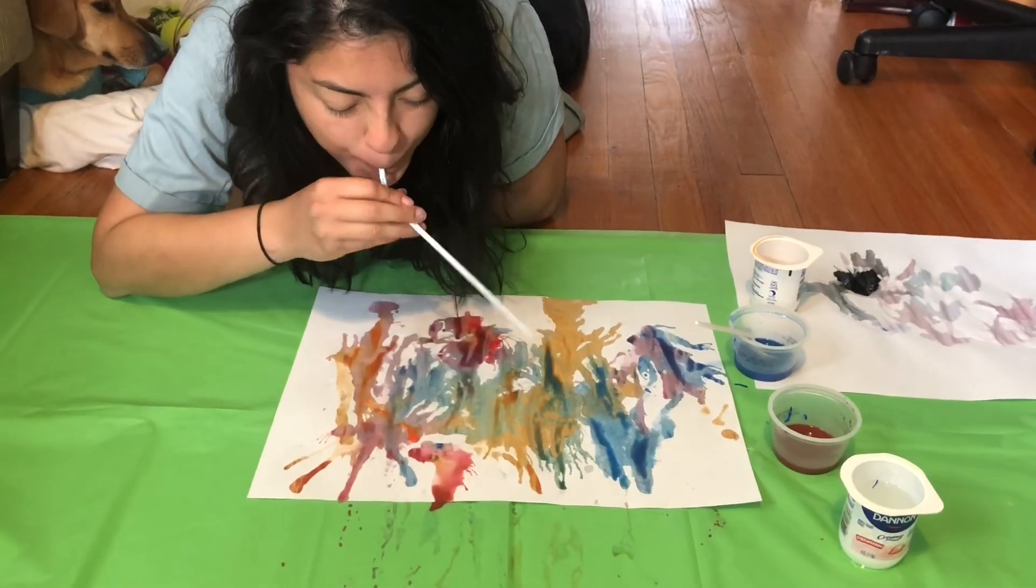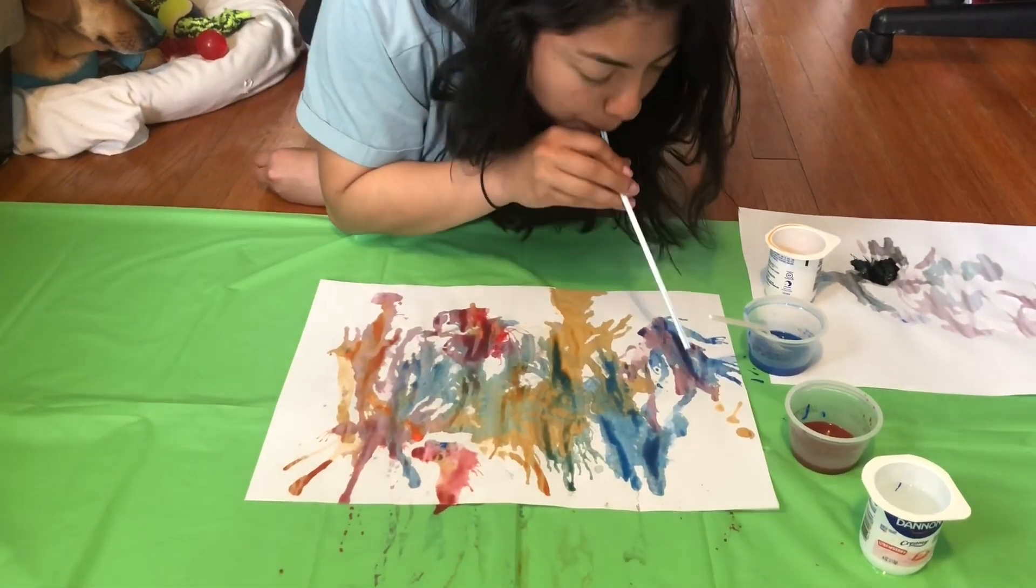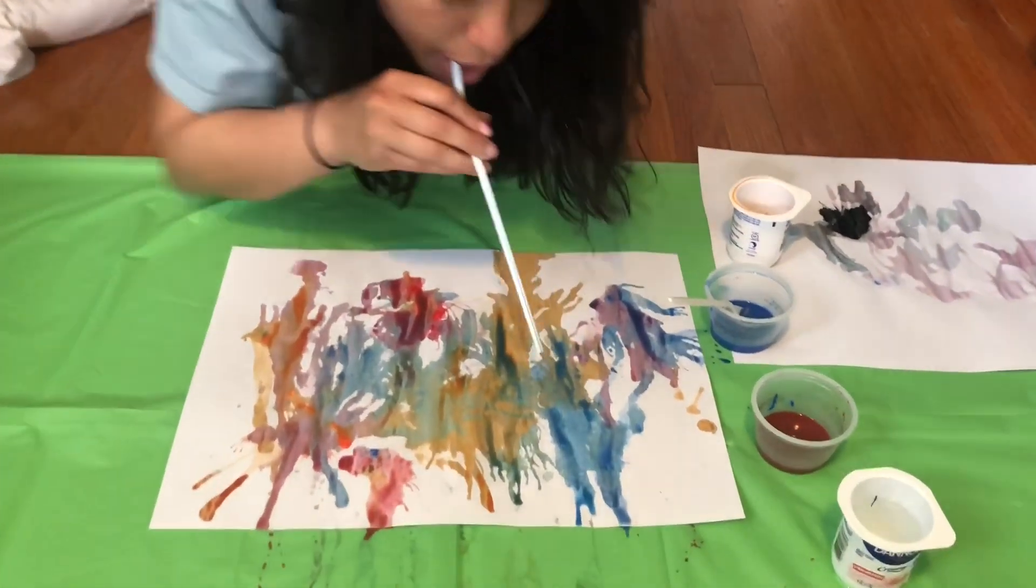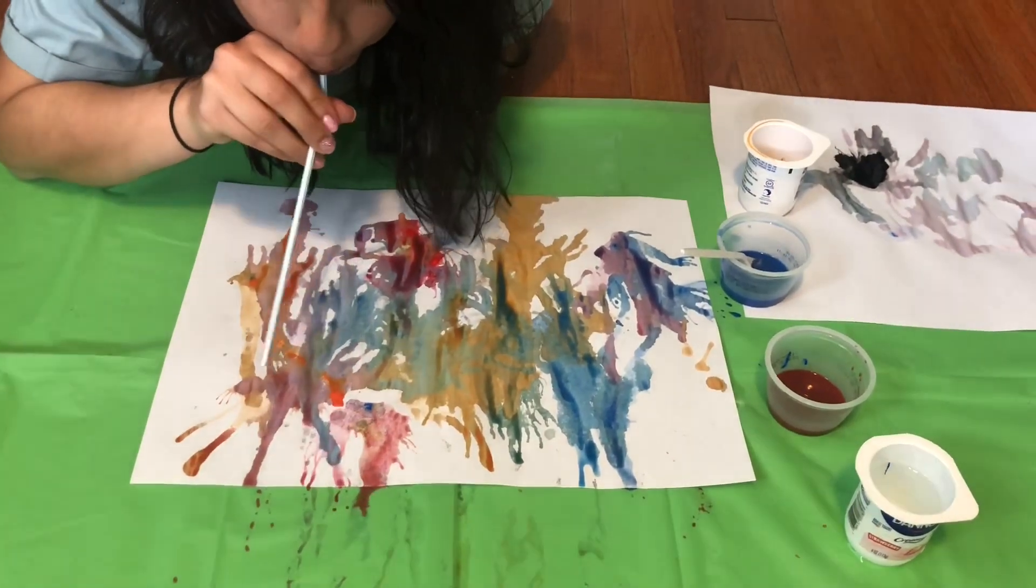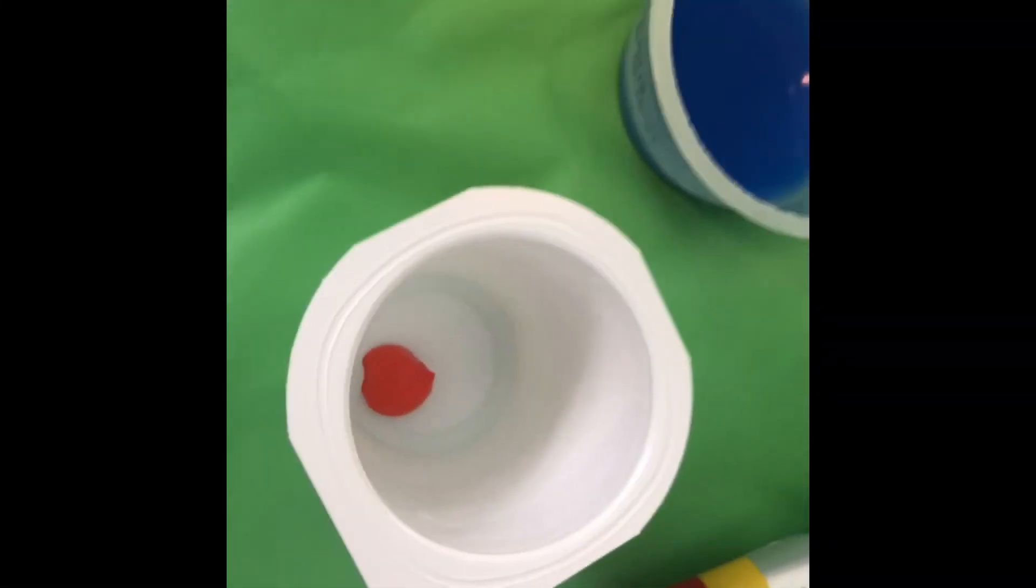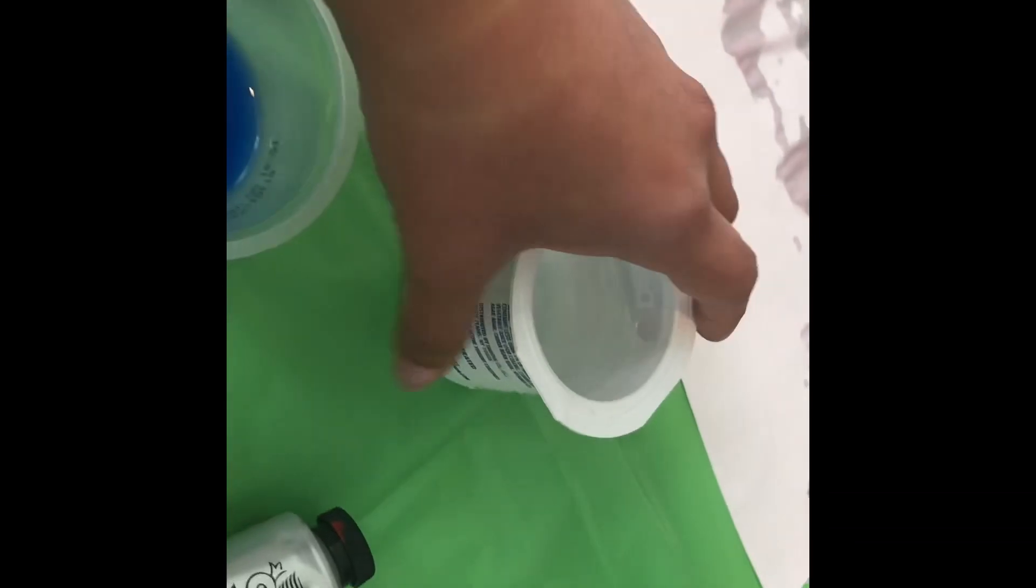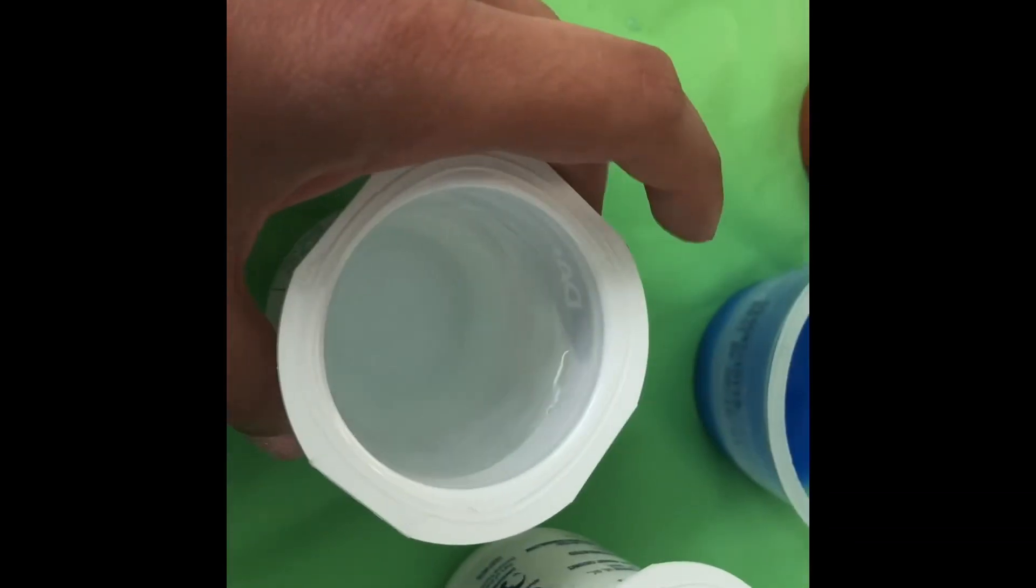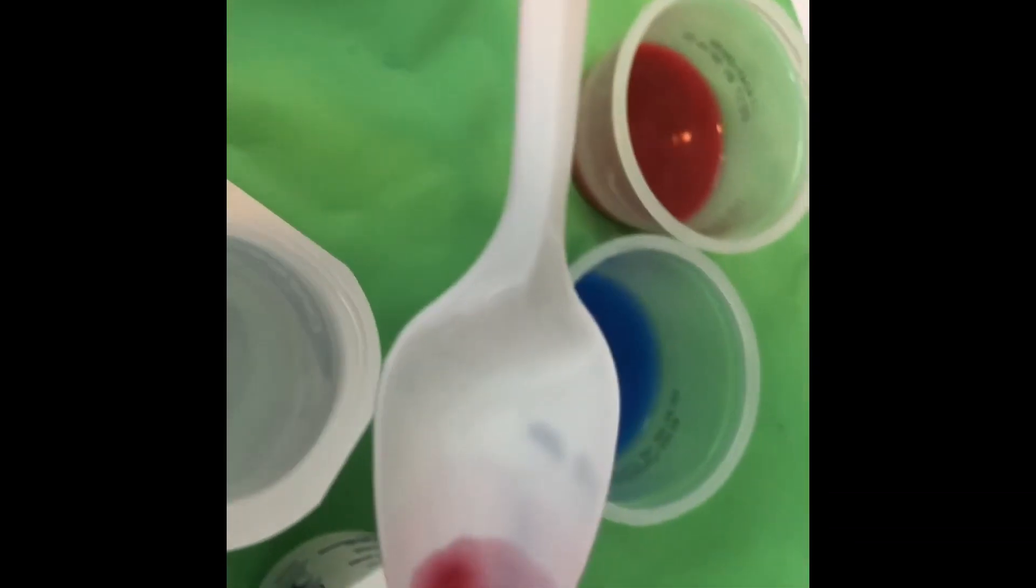Now for this next activity, you can make some abstract art using a straw. You can just use some paint, some water, and a spoon to mix it up.